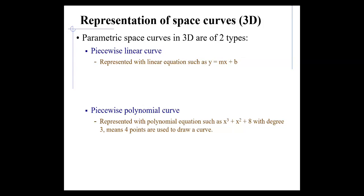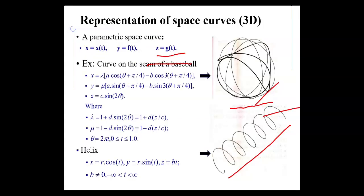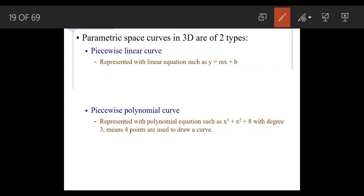There are two types of parametric representation in 3D. The first is piecewise linear curve. Suppose we take four to five points — first, second, third, fourth, and fifth. In piecewise linear curves, we connect these points with straight lines, represented with a linear equation such as y = mx + b.